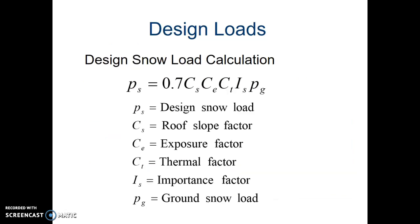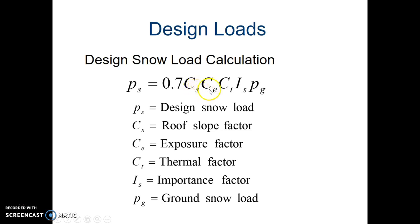Here is the design snow load calculation. PS is the design snow load, and it equals 0.7 — a constant — times CS, which is the roof slope factor, times CE, which is the exposure factor, times CT, which is the thermal factor of the building, times IS, which is the importance factor of the building, times PG, which is the ground snow load.